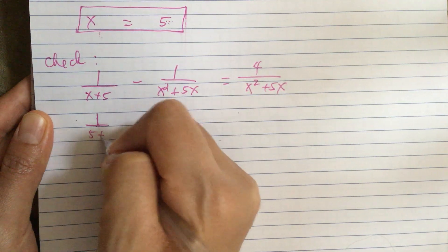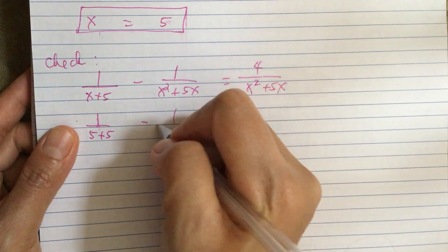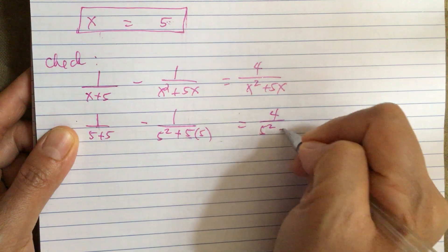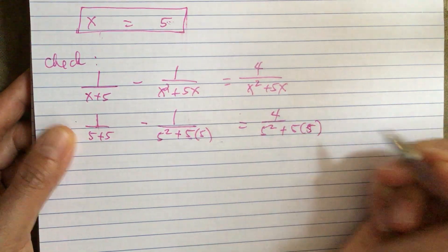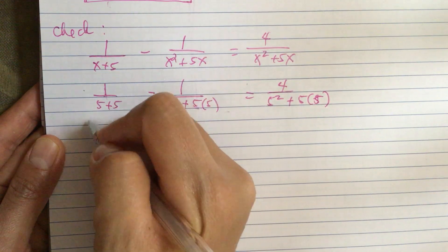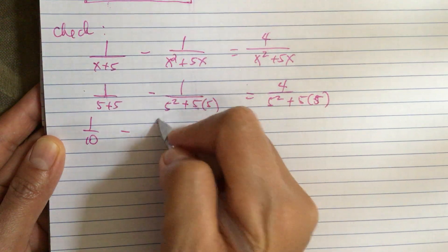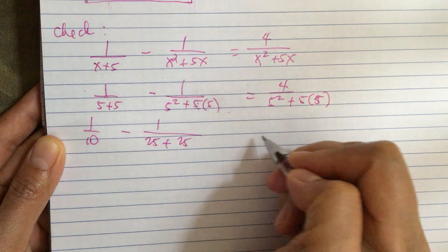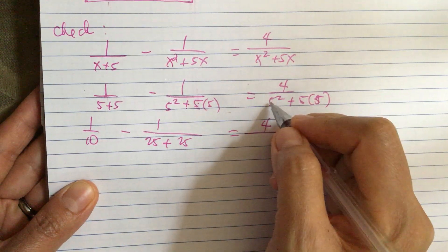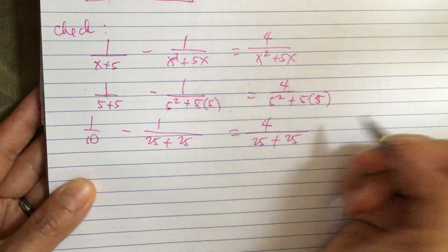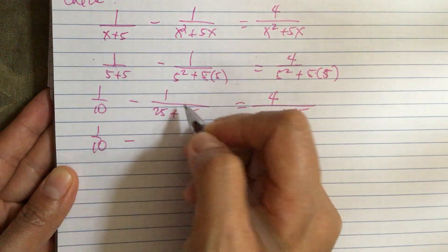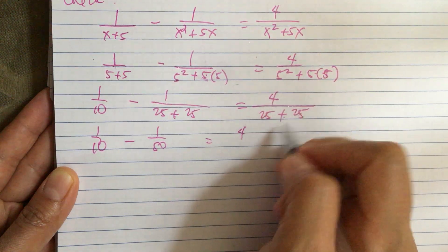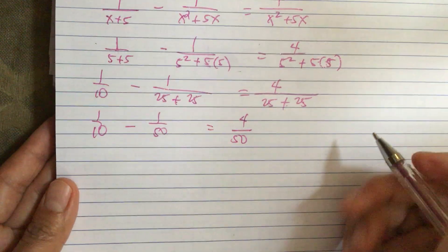Substituting x equals 5: 1 over (5 plus 5) minus 1 over (5 squared plus 5 times 5) equals 4 over (5 squared plus 5 times 5). Simplifying: 5 plus 5 equals 10, and 25 plus 25 equals 50. So we have 1 over 10 minus 1 over 50 equals 4 over 50.